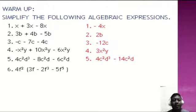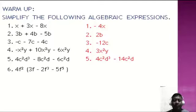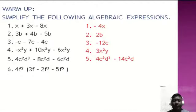Number six: 4f squared times the quantity 3f minus 2f cube minus 5f to the 5th. Take note: to find the product of a trinomial by a monomial, just apply the distributive property. So: 4f squared times 3f is 12f cube, minus 8f to the 5th, minus 20f to the 7th.